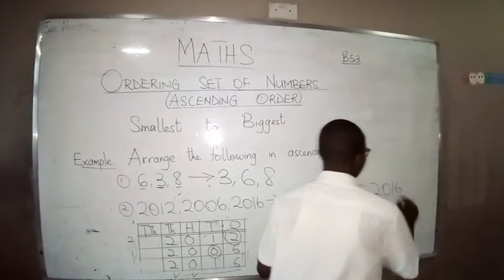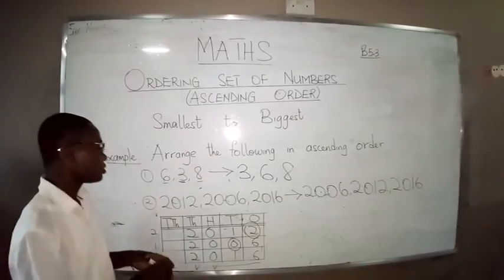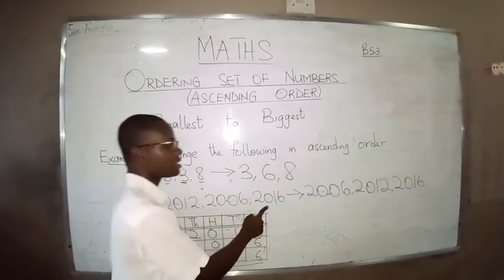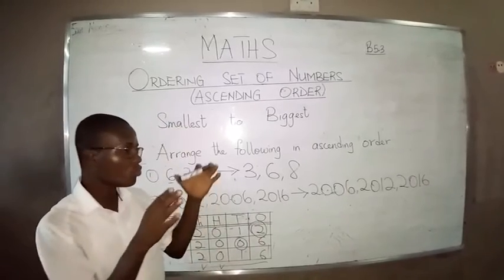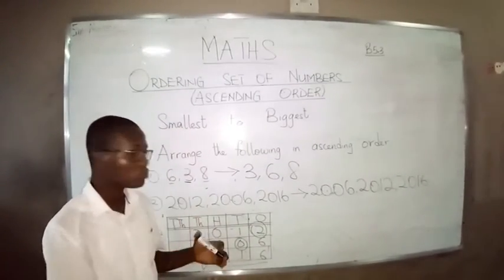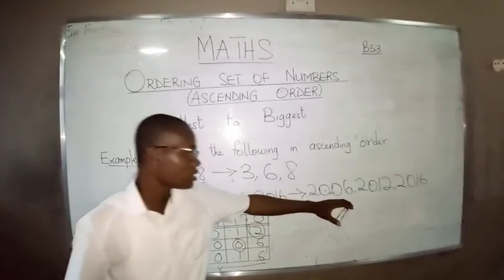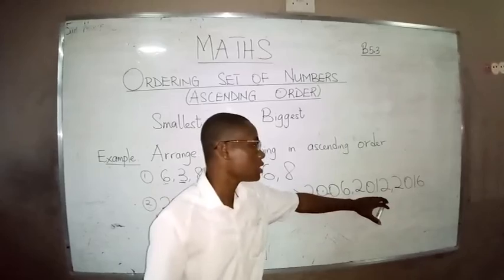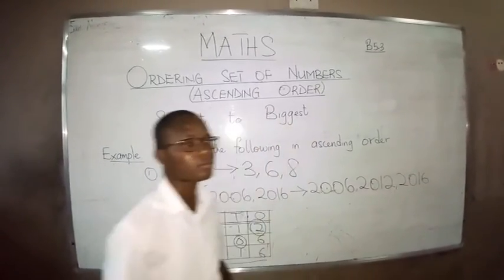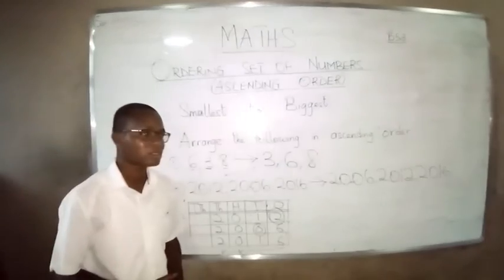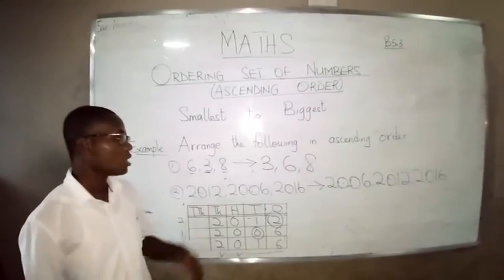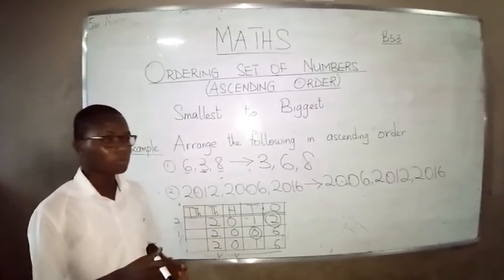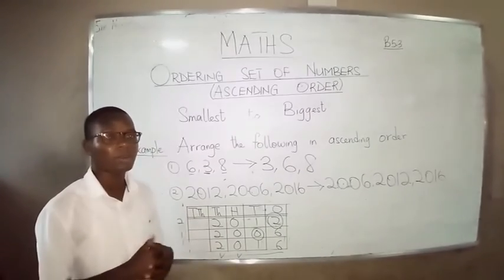Then the last one is 2016. So when you arrange 2012, 2006, and 2016 in ascending order, the answer is: 2006, then 2012, then 2016. It's very, very simple. You are going to do the same with the exercise I am going to write down. Thank you very much.